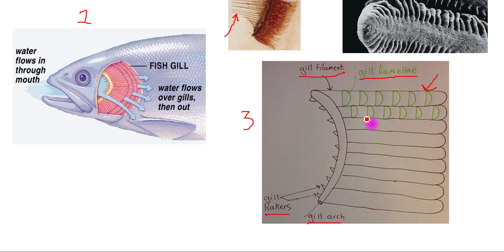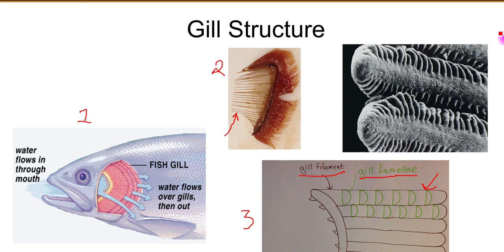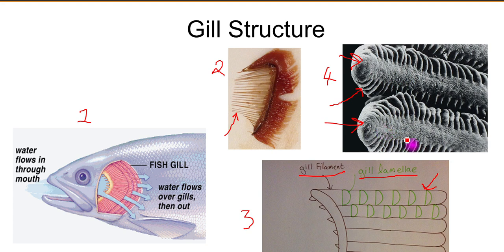If we look at diagram number four, this is an electron microscope image of two gill filaments. The gill lamellae are the structures projecting out of the surface of the gill filament. These gill lamellae don't lie flat on the gill filament as my diagram three shows — they actually project out at about 90 degrees, sticking up. It's these that provide the gas exchange surface of the fish.